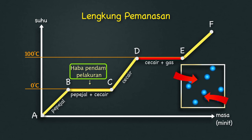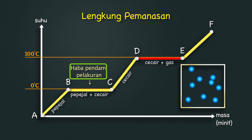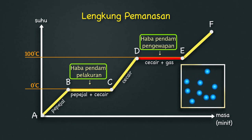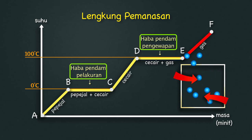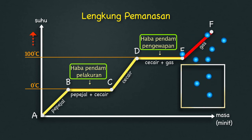DE — Haba diserap untuk memutuskan ikatan antara molekul. Tenaga kinetik tidak meningkat, maka suhu tidak berubah. Fasa cecair ke gas dikenali sebagai haba pendam pengawapan. EF — Haba diserap menyebabkan tenaga kinetik bertambah, suhu gas meningkat.